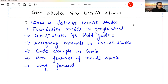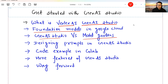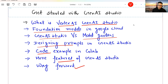Here are the topics for the video. We are going to see what is Vertex AI Gen AI Studio, what are foundation models in Google Cloud, what is model gardens in Google Cloud, and how to design prompts in Generative AI Studio. I'll show you a demo, a code example in Google Colab, more features of Gen AI Studio, and the way forward. This video may be a little longer, but please watch till the end — these are very important concepts, which are the future of the world of NLP.